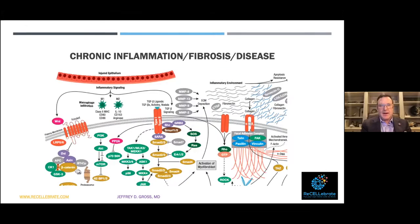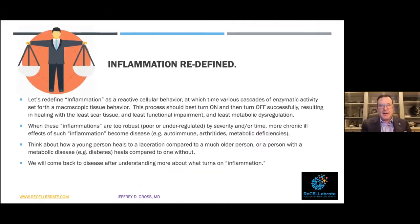Chronic inflammation leads to fibrosis and disease. Some of these proteins that are turned on represent cascades of activity in the cell that occur when a patient's cells respond to an inflammatory insult. It makes sense to redefine inflammation as a reactive cellular behavior during which various cascades of enzymatic activity are set forth — causing macroscopic tissue change. These processes should best turn on and then off successfully so that healing is optimal with the least scar, least functional impairment, and least metabolic dysregulation.